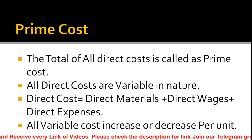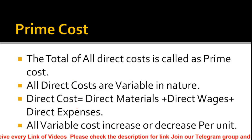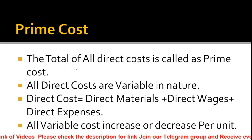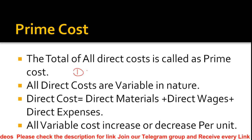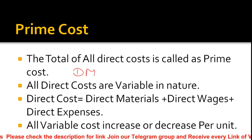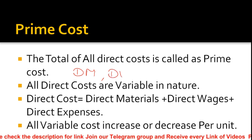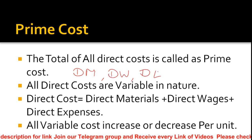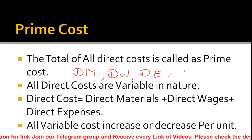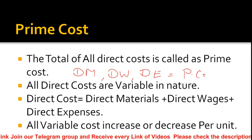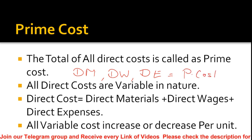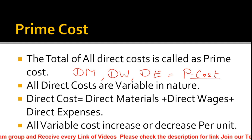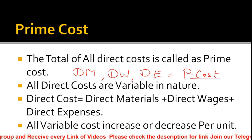Prime cost is made up of three expenses: one is direct material, two is direct wages, and three is direct expenses. If we add these three, the answer is called prime cost. The total of all direct costs is called prime cost.